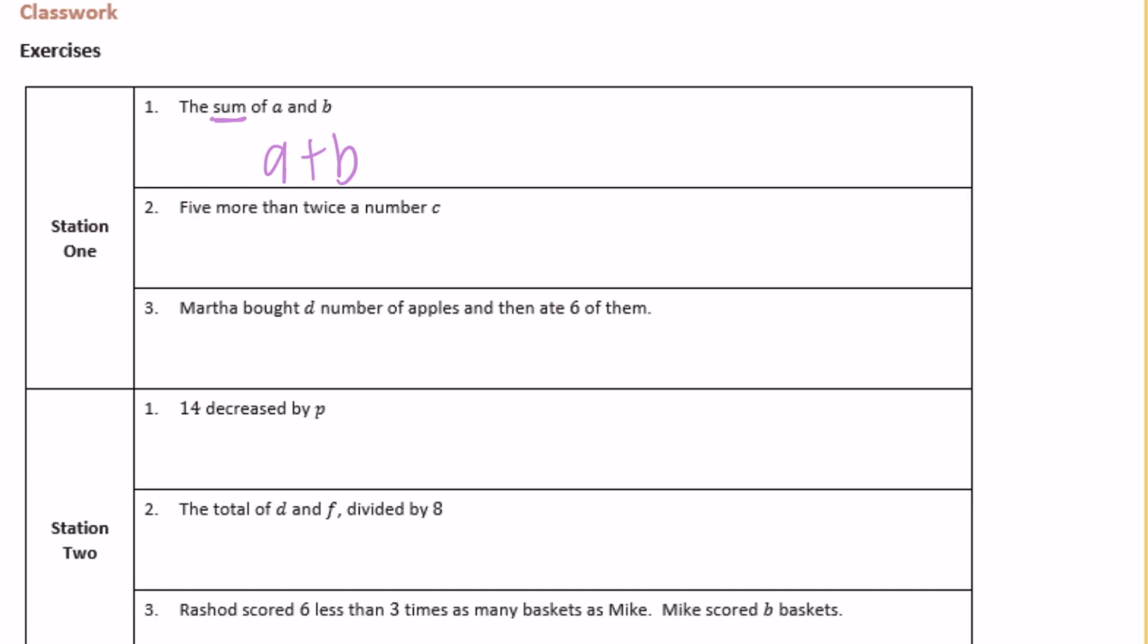Number two, five more than twice a number c. Five more means we're adding, then twice, so two times a number c. We have two times c and five more than that, so 2c plus 5. Or you could reverse the order, 5 plus 2c.